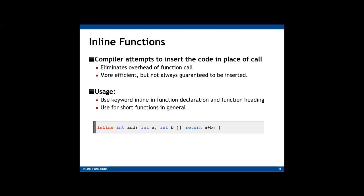Now let's talk about inline functions in a class. We already learned what an inline function is in week 4 when we were discussing functions. To quickly recall: an inline function is one where the compiler inserts the function definition at the place where its function call is made. By doing this, the overhead of the function call can be eliminated, making your program more efficient. To make an inline function, you use the inline keyword. Because the function body is inserted where the function call is made, we generally use inline functions for small functions.